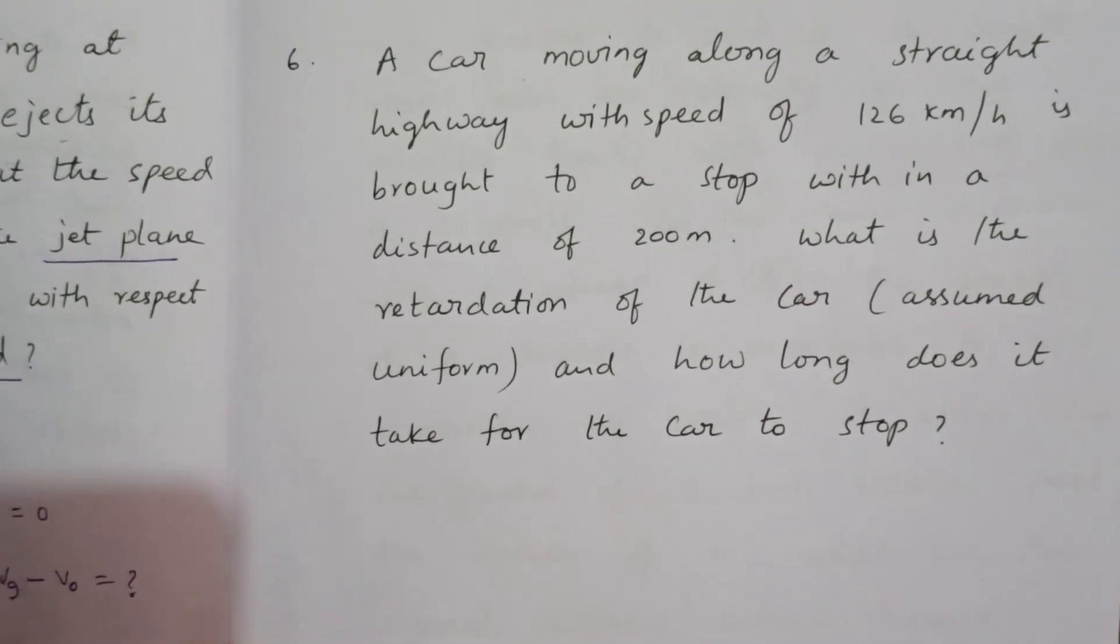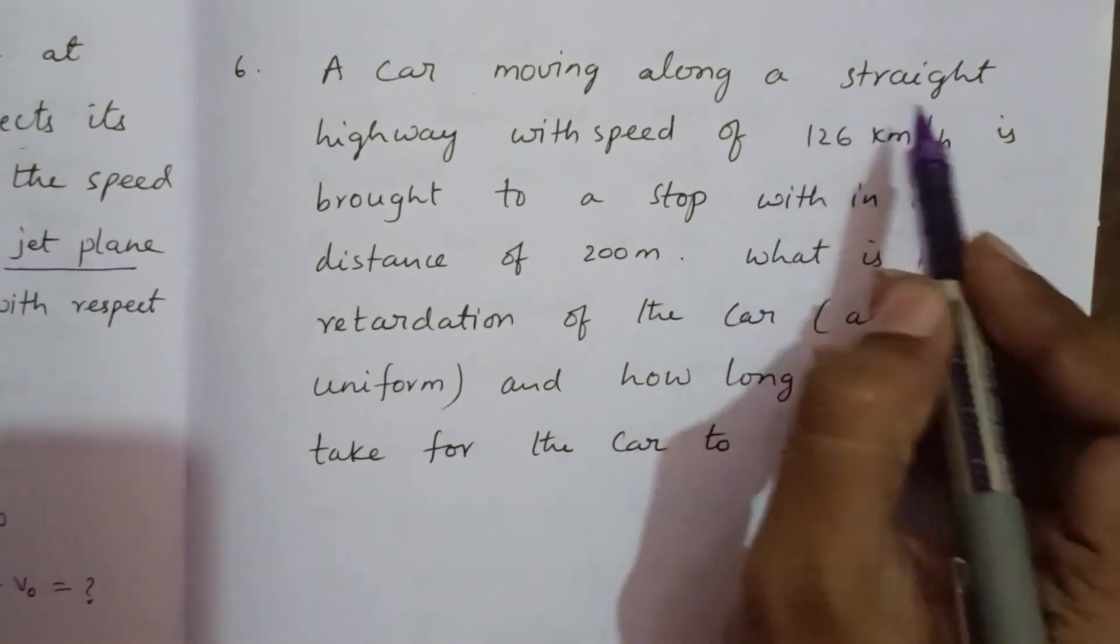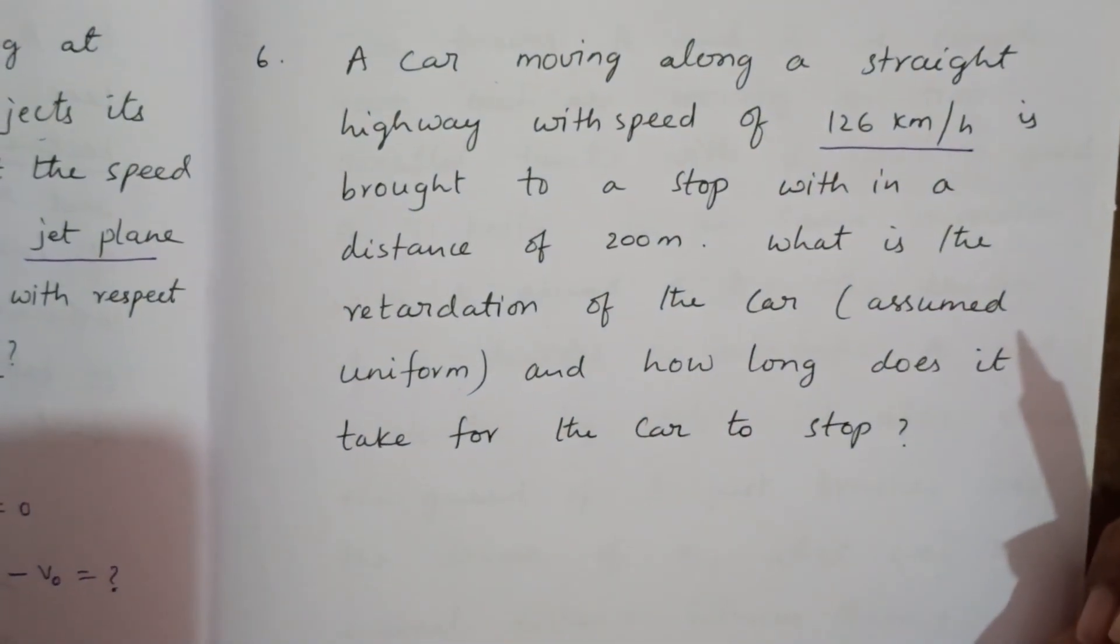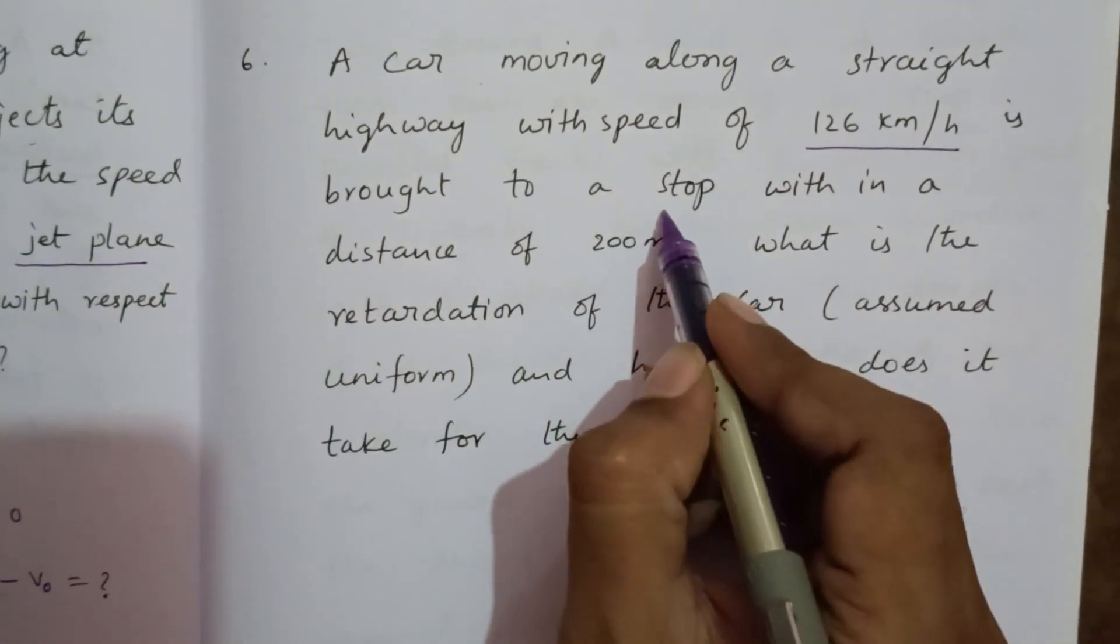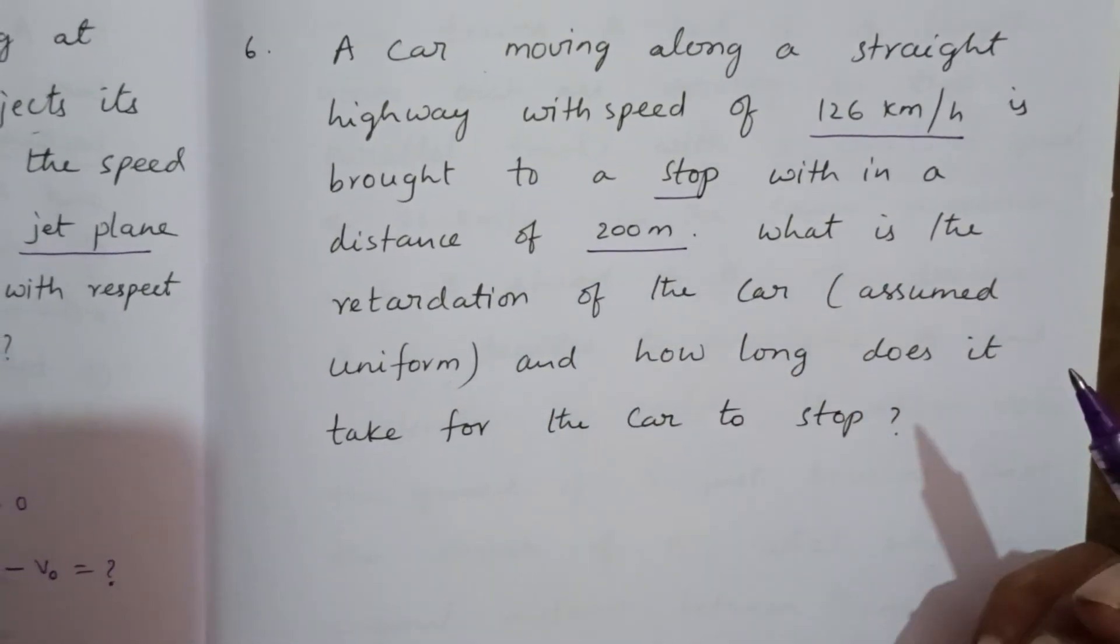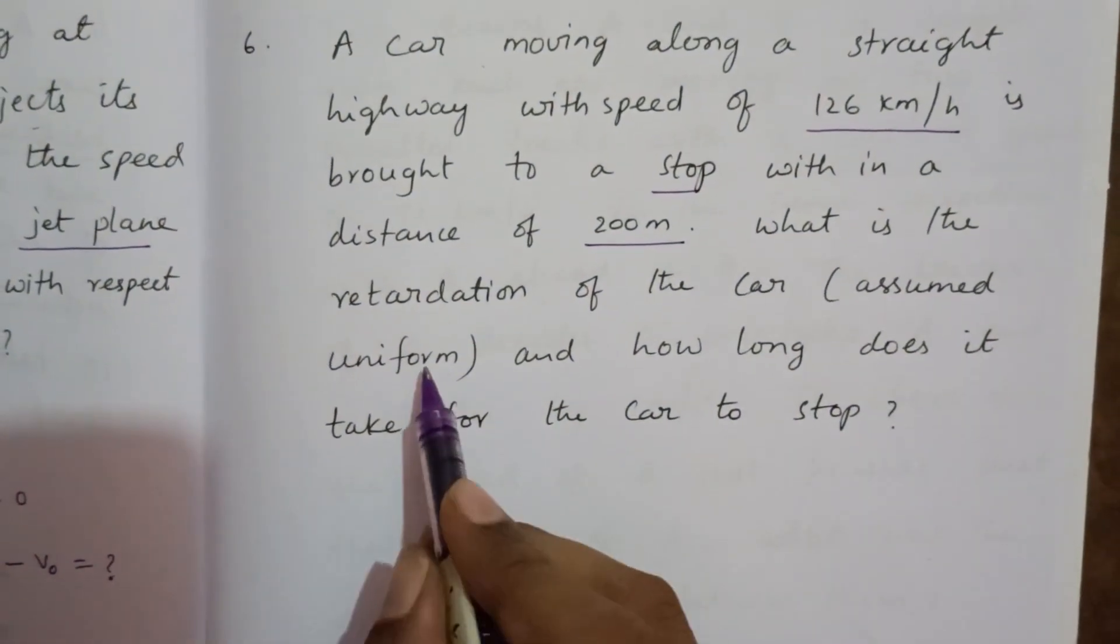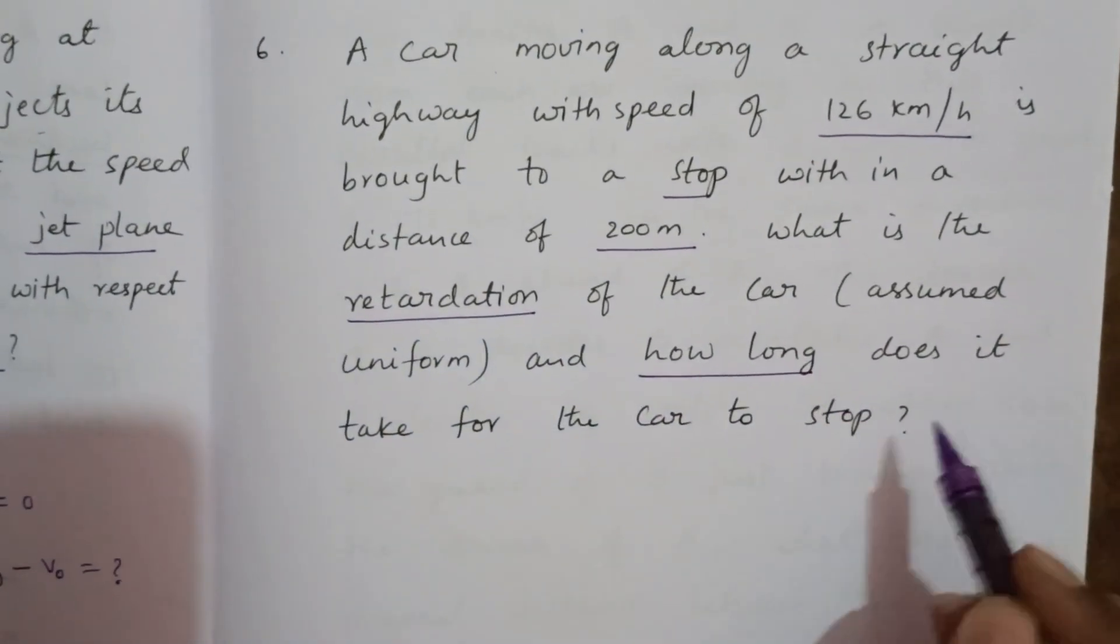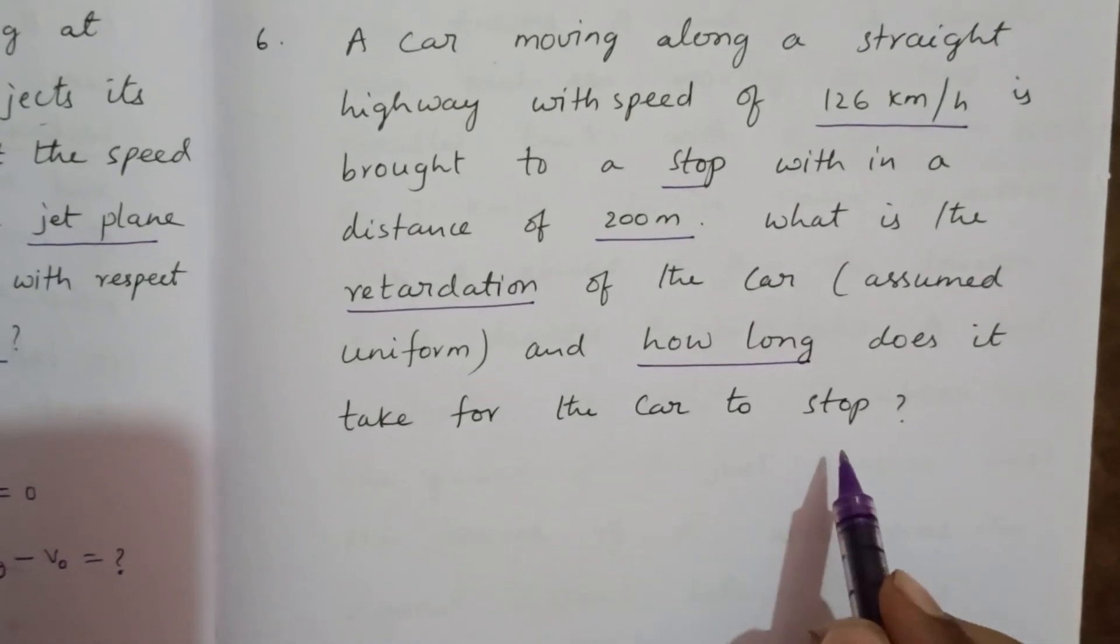Now the sixth question. A car is moving along a straight highway with a speed of 126 km per hour and is brought to a stop within a distance of 200 meters. What is the retardation of the car, and how long does it take for the car to stop?